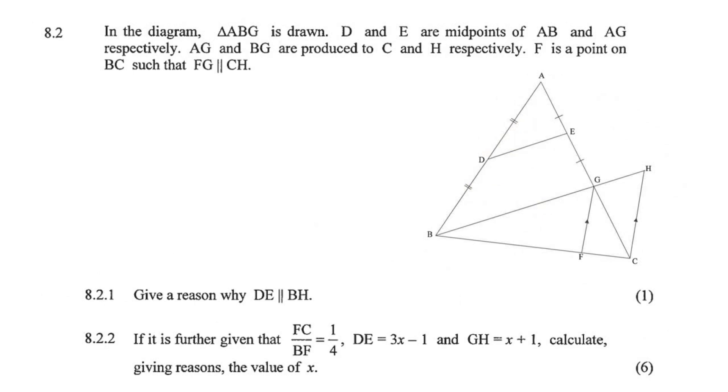In the diagram, triangle ABG is drawn. D and E are the midpoints, so D and E are the midpoints. Okay, so we've got all that.